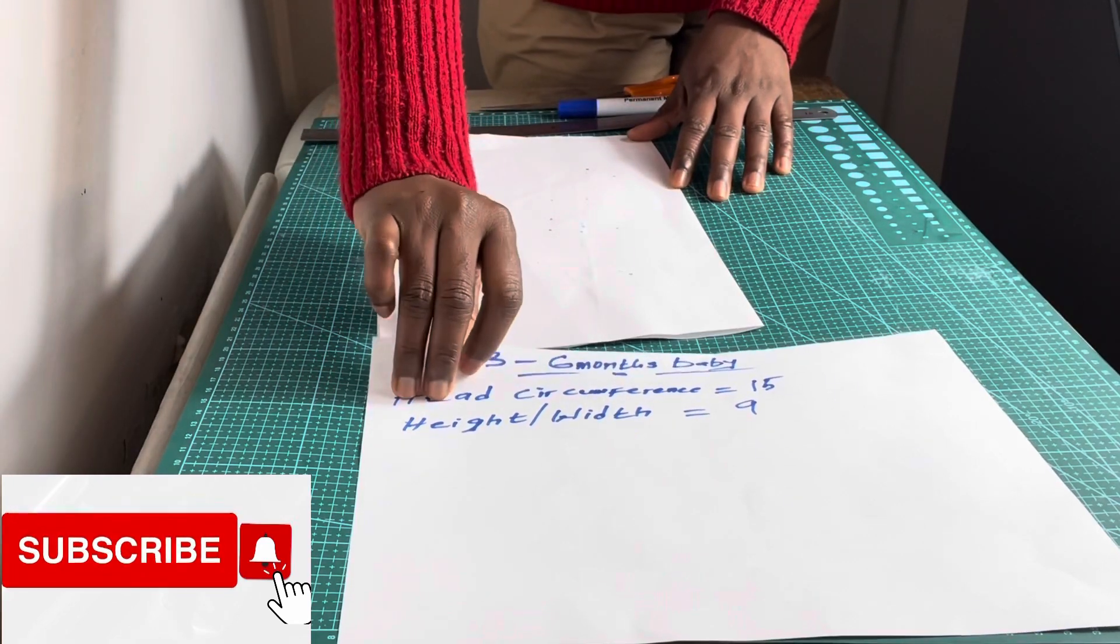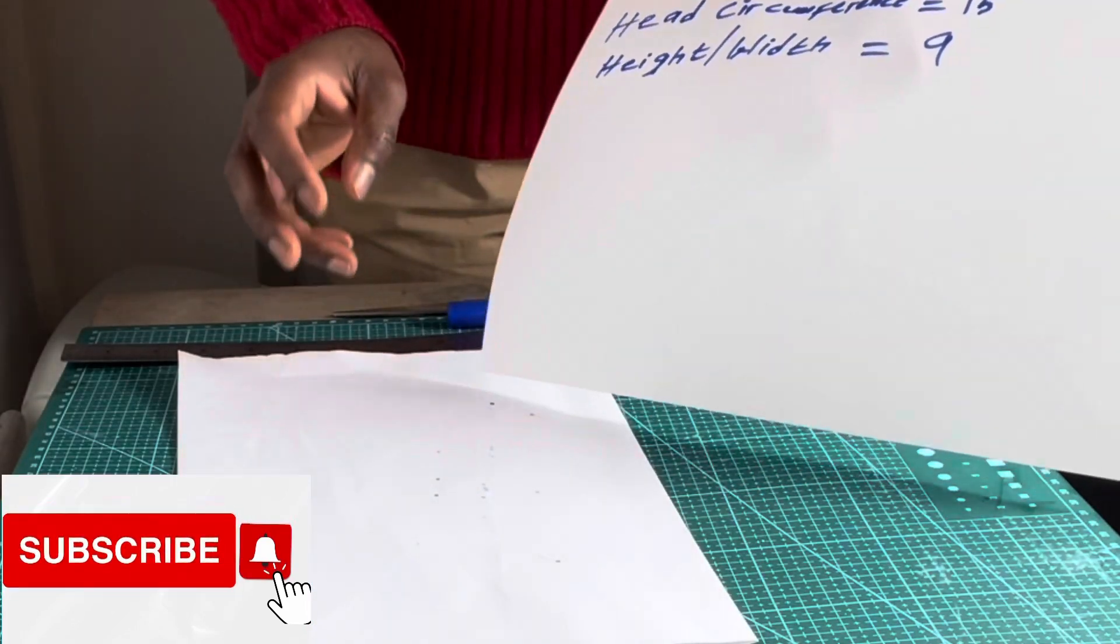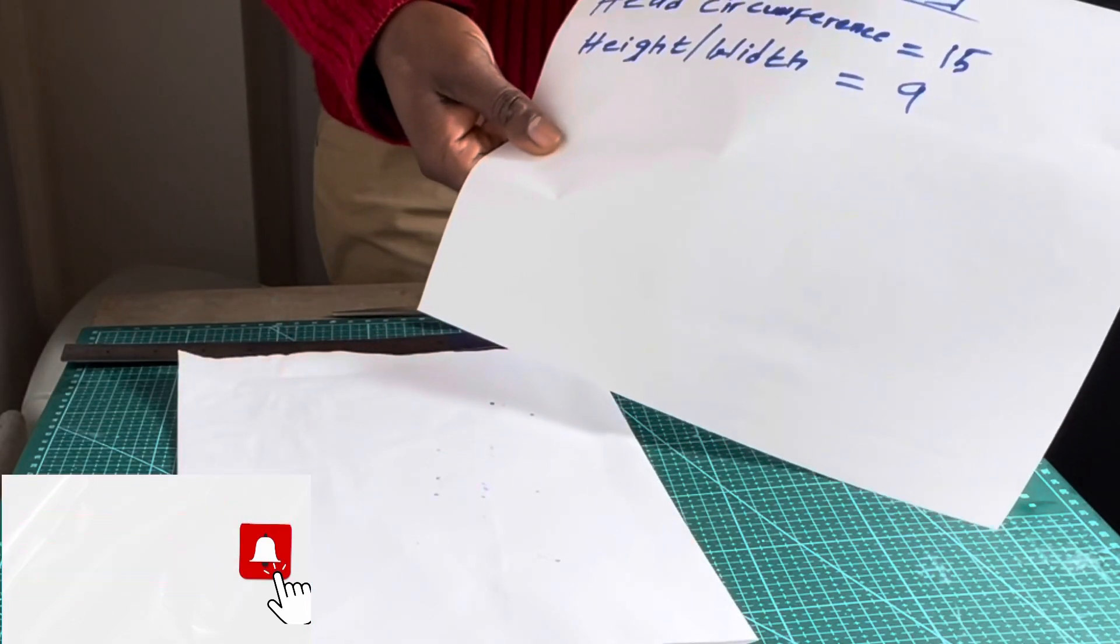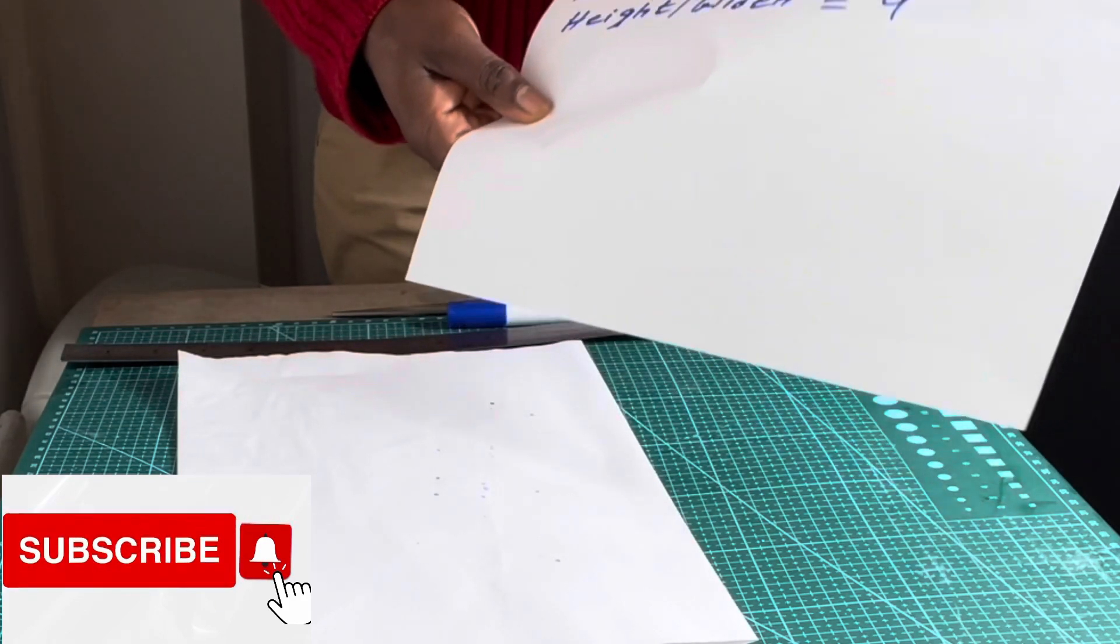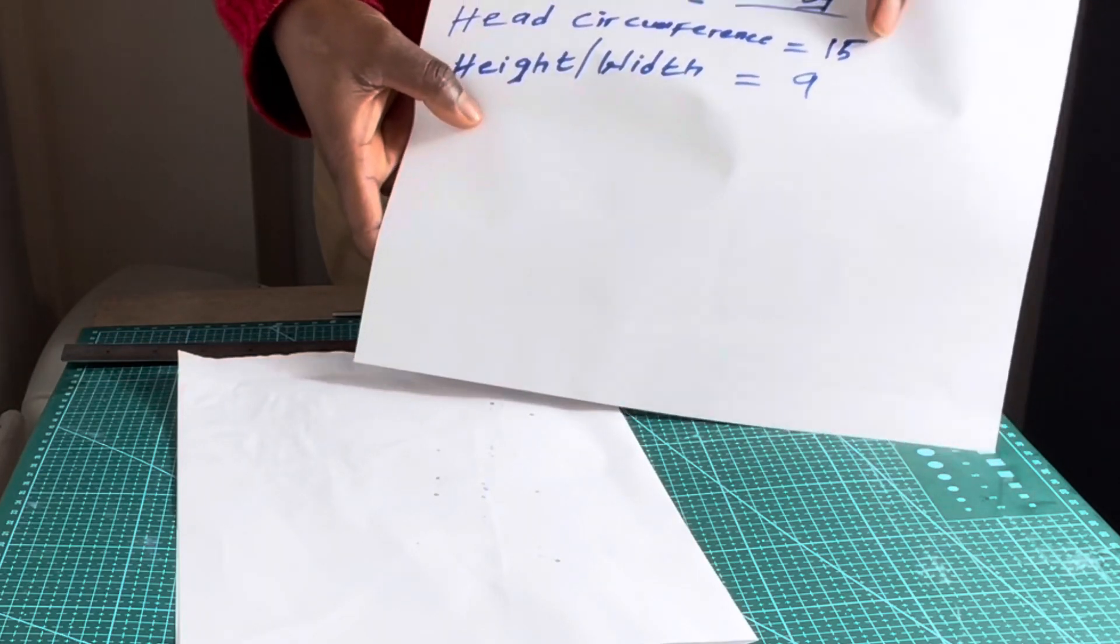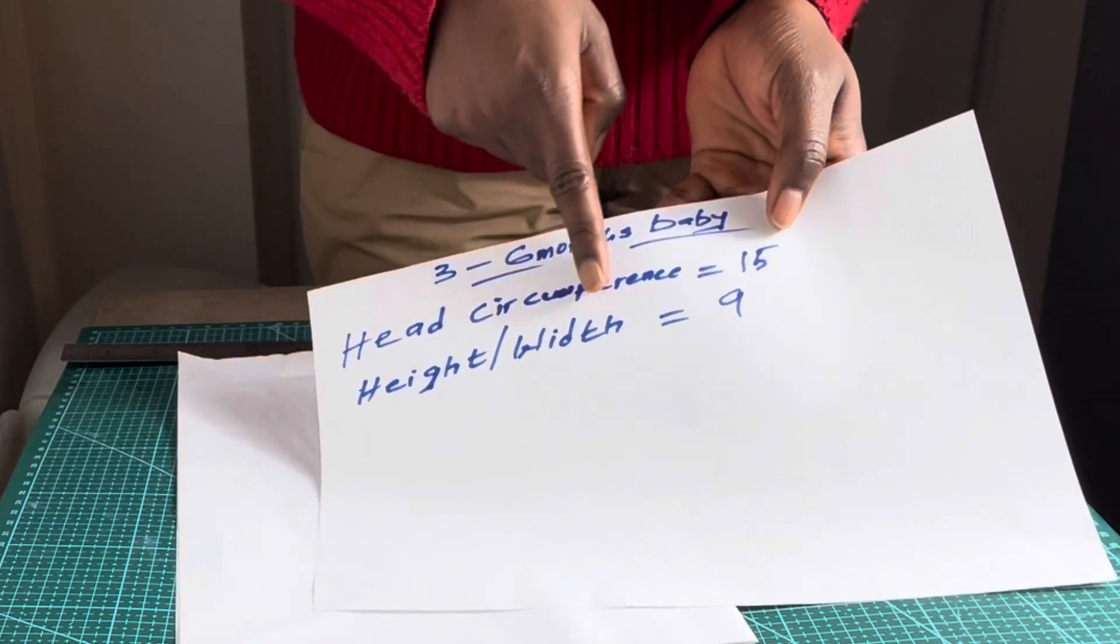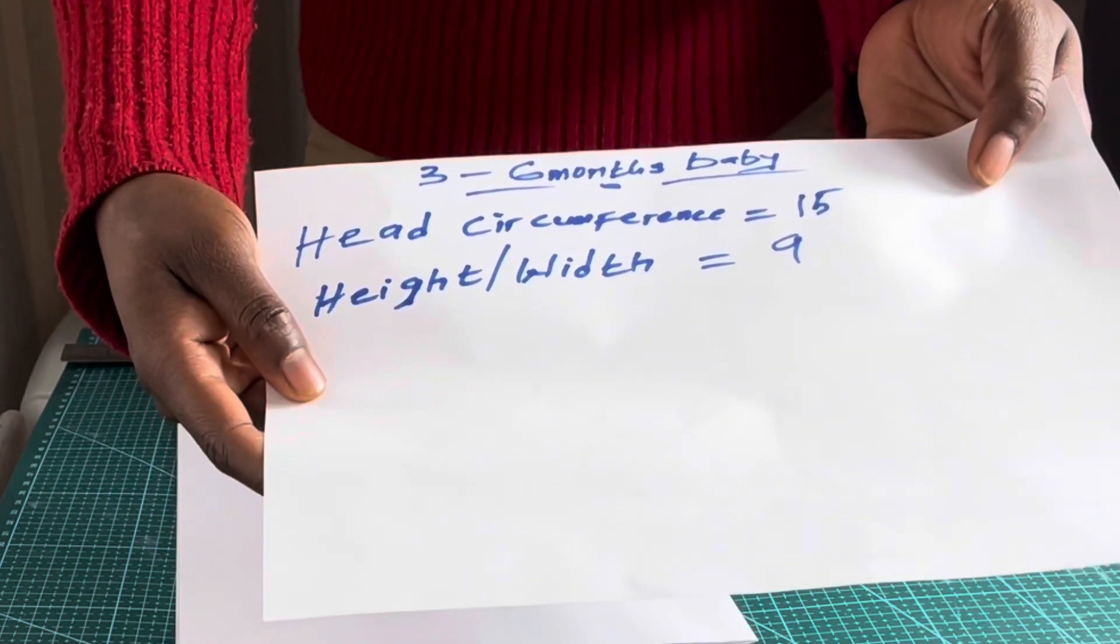I have my measurements here. Remember I said the measurements for this pattern we are drafting is for a three to six month old baby. The head circumference I'll be going for is 15 inches and the height or width is 9 inches.